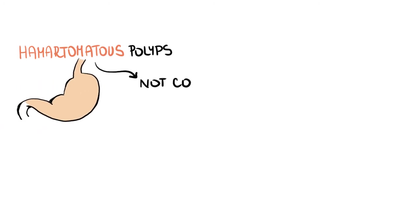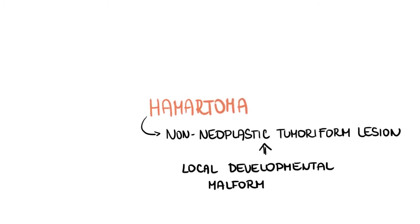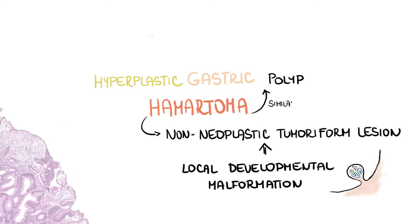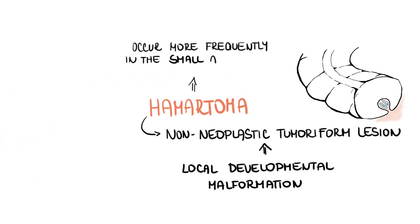Hamartoma polyps of the stomach are not common. Briefly, a hamartoma is a non-neoplastic tumor-like lesion caused by local developmental malformation of the tissue, and it may appear as a polypoid lesion as well. On the microscopic level, it may be very challenging to distinguish them from hyperplastic gastric polyps. Since these polyps occur more frequently in the small and large intestine, they will be described in the videos referring to intestinal polyps.